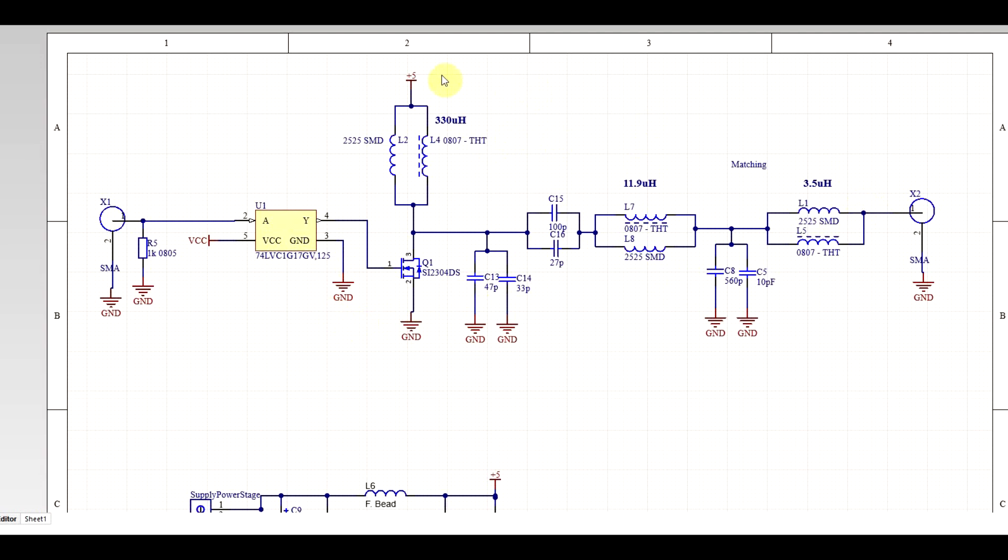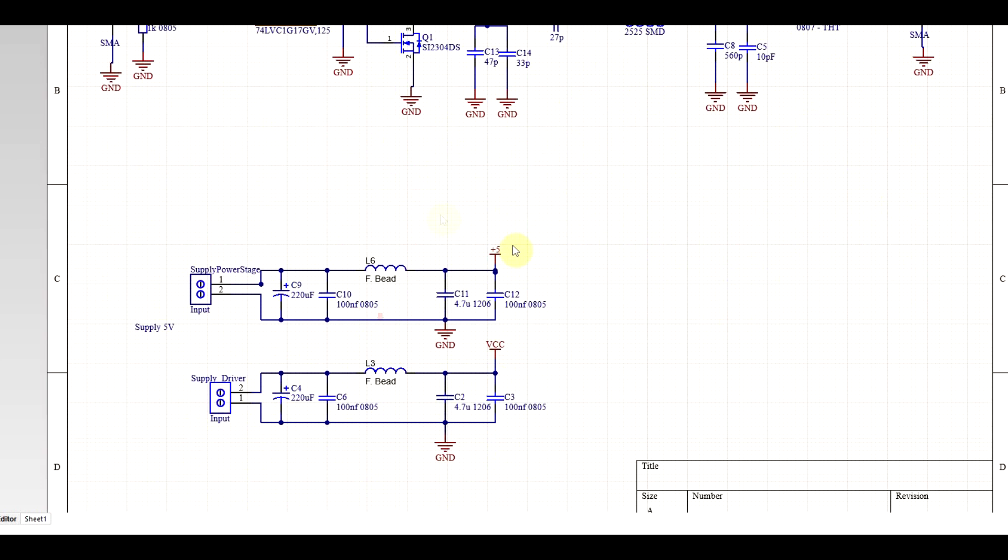To supply the circuit, there are two different supply lines, so one is dedicated to the power stage, and the other one is for the gate driver. These two are separate, they are filtered independently, and the reason to do this was to be able to measure the power drawn by each part of the circuit.